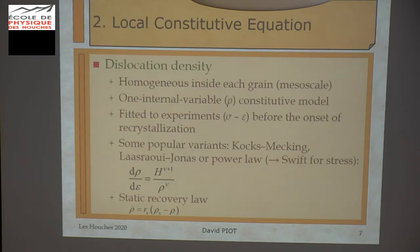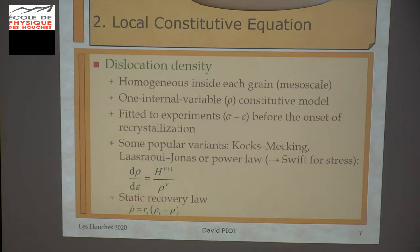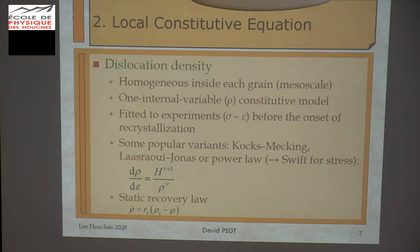All mean field models for dynamic recrystallization use this canvas. Going into more detail about the local constitutive equation, the most common way is to use a one internal variable constitutive model, and this internal variable is the dislocation density, which is considered as homogeneous inside each grain. It is fitted to stress-strain experimental curves before the onset of recrystallization. It's possible to use the Kocks-Mecking equation, or the generalized equation — the most popular. It's also possible to use a power law, which is very convenient because it's possible to integrate the model in closed form.